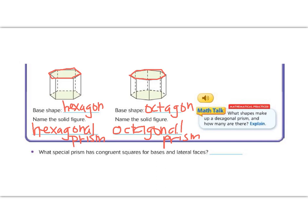Alright, down below let's think about this question. What prism would have congruent squares for bases and faces? Well, if I have a square on the sides, but I also have a square on the top and the bottom, that would give me a cube.